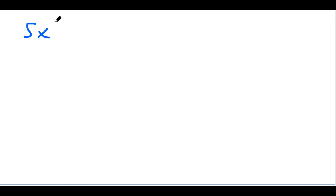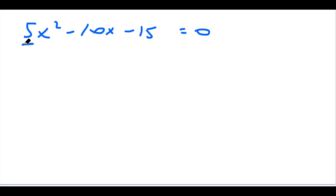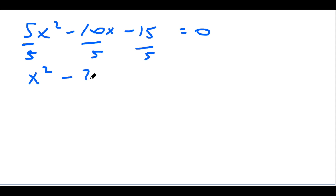5x squared minus 10x minus 15 equals 0. See this leading coefficient, this 5 in front? What you want to do is you want to divide everything by 5, so it's a little bit easier to complete the square. So now you have x squared minus 2x minus 3 equals 0.